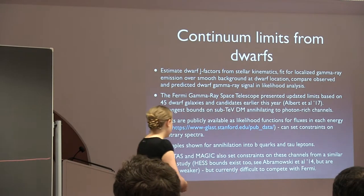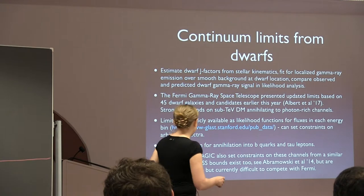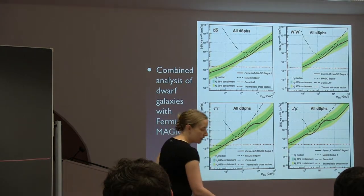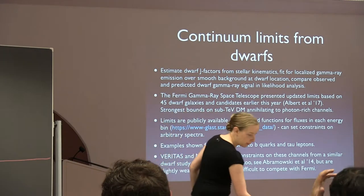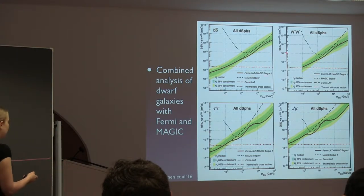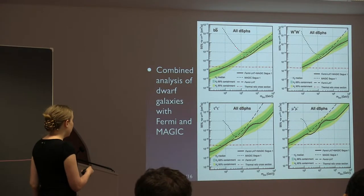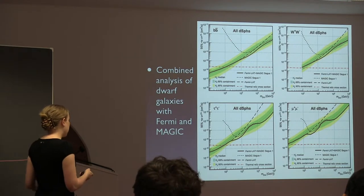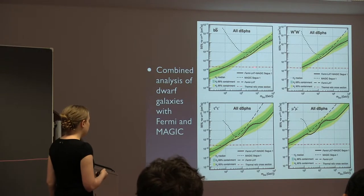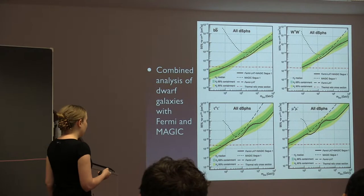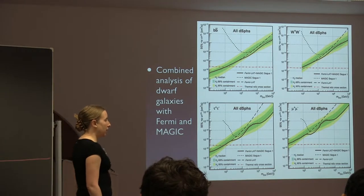I'm going to show you examples for annihilation into b quarks and tau leptons — the photon-rich continuum final states — and leptonic channels a bit later. At higher energies you can also set constraints from looking at dwarfs with Veritas, MAGIC, or HESS. This is a combined analysis from last year of dwarf galaxies with Fermi at low energies and MAGIC at high energies. The dashed line shows the Fermi constraint, the narrow dashed line shows the MAGIC constraint, and the solid line shows the combined limit.